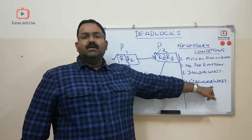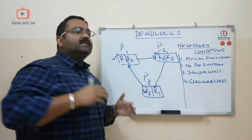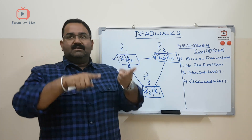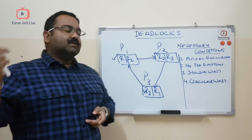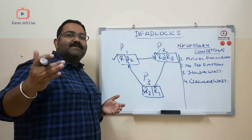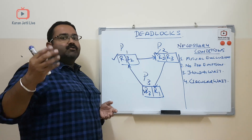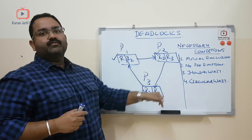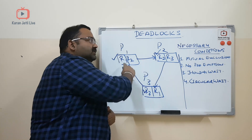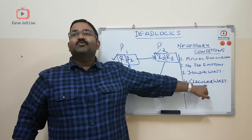Then comes circular wait. Circular wait is an extension of hold and wait. Processes are holding resources and waiting for other resources, and the wait is in the form of a circle — we call it circular wait. This is also represented using a resource allocation graph, which shows which resource has been allocated to which process and which resource that process is waiting for. If there is a cycle in the resource allocation graph, that condition is called circular wait — the processes are waiting for resources in a circular fashion.